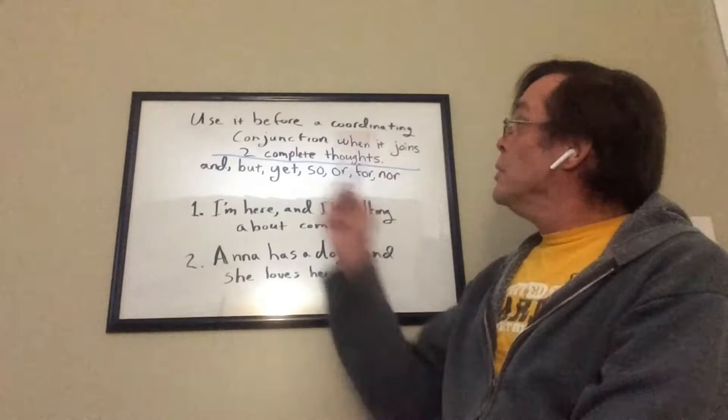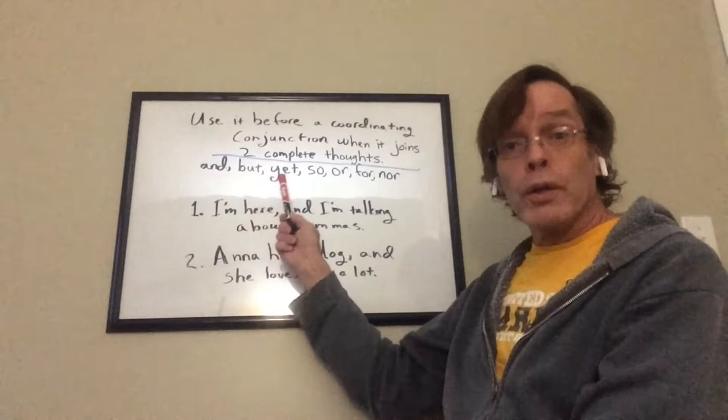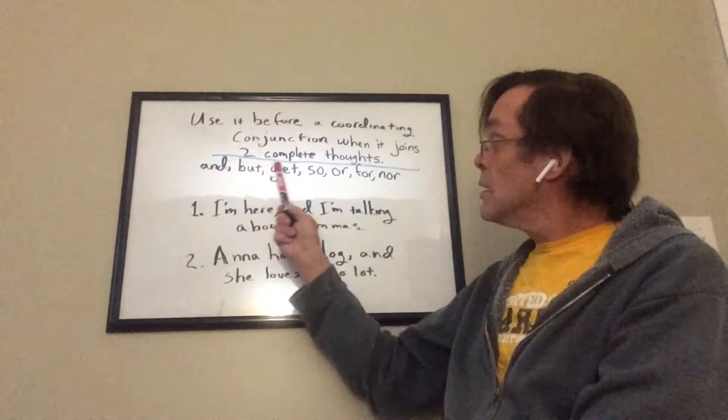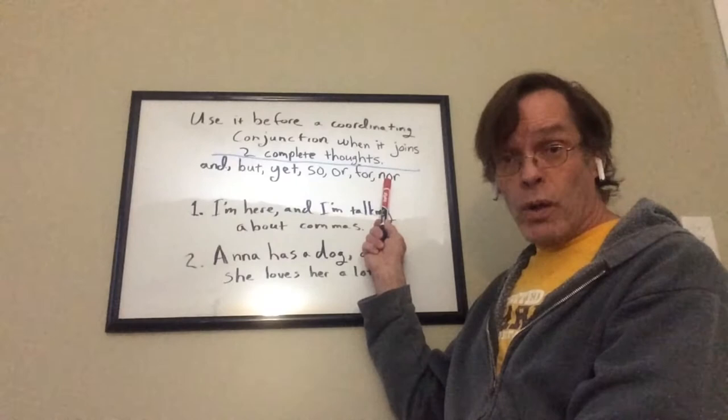The first rule for using commas is you use it before a coordinating conjunction when it joins two complete thoughts. These words are coordinating conjunctions: and, but, yet, so, or, for, and nor.